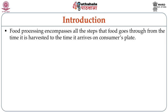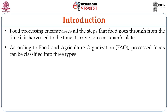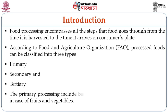Food processing encompasses all the steps that food goes through from the time it is harvested to the time it arrives onto the consumer's plate. According to the Food and Agricultural Organization, processed foods can be classified into three types: primary processing, secondary processing, and tertiary processing. Primary processing involves basic cleaning, grading and packaging, as in the case of fruits, vegetables, fruit grains, millets, etc.